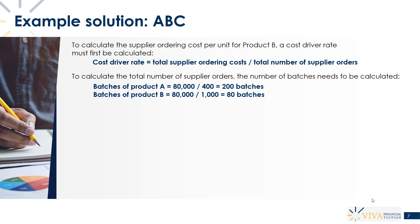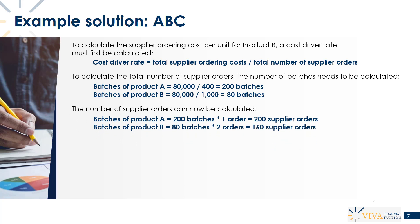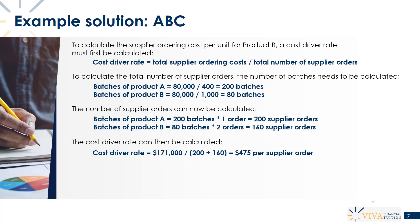Now we can work out the total number of supplier orders. We place one order per batch of product A, so 200 batches gives 200 supplier orders. We place two orders per batch of product B, and with 80 batches that's 160 supplier orders. In total, we have 200 plus 160, giving us 360 supplier orders.